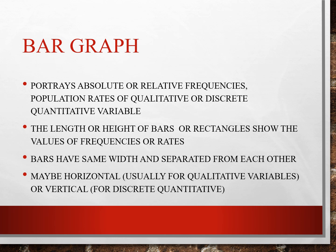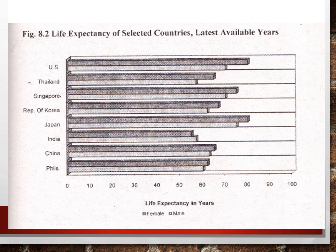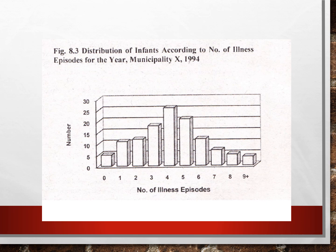Bar graph: used to trace absolute or relative frequencies, population rates of qualitative or discrete quantitative variables. The length or height of bars or rectangles shows the value of frequencies or rates. Bars have the same width and are separated from each other — may be horizontal, usually for qualitative variables, or vertical for discrete variables. This is a graphical representation of the tabular form example — the 10 leading causes of mortality in the Philippines. In one glance you can see the top three diseases and see how they are affecting Filipinos. Another example shows the distribution of infants according to number of illness episodes for the year.